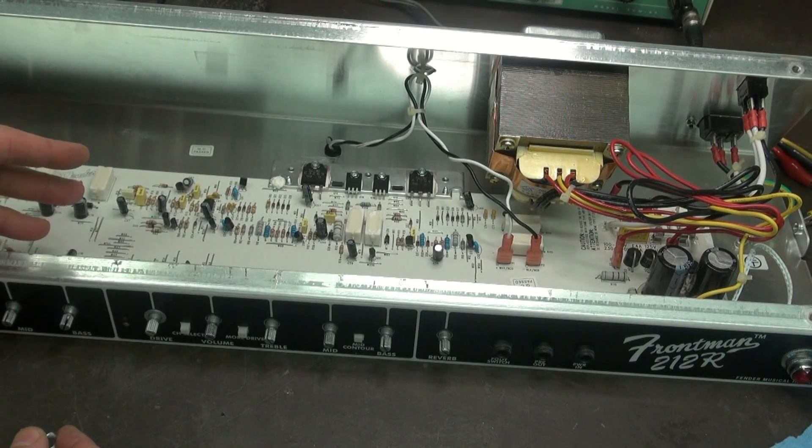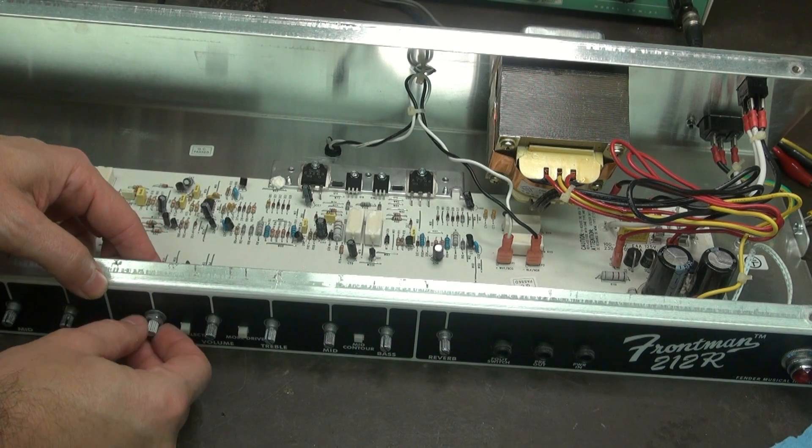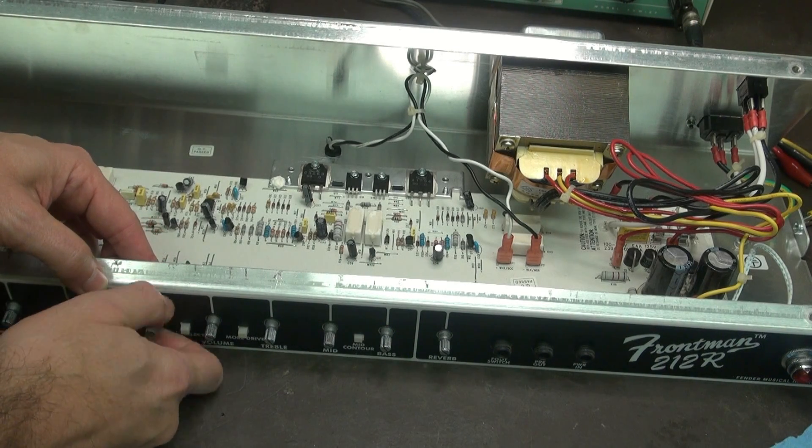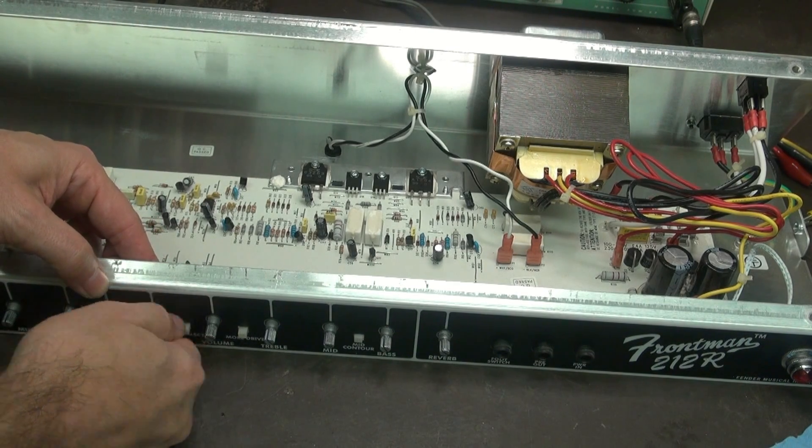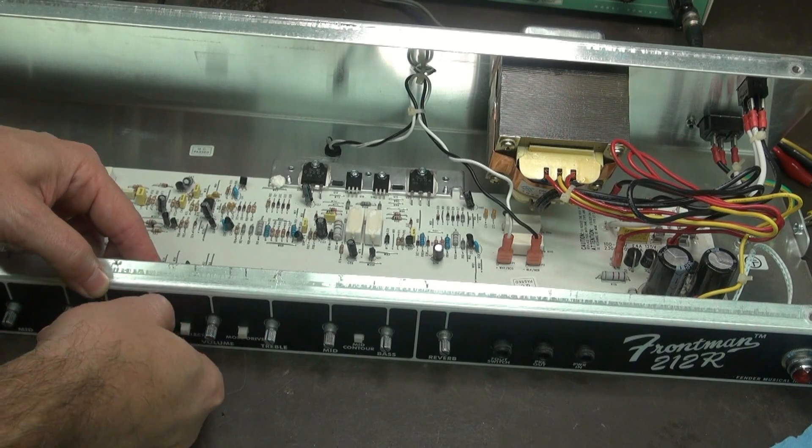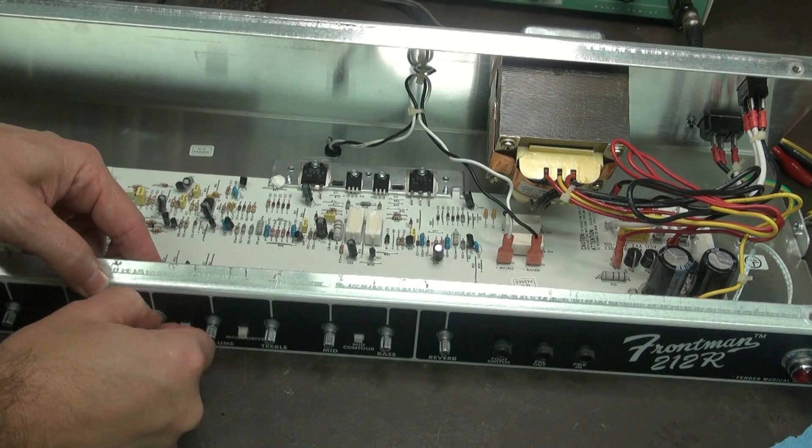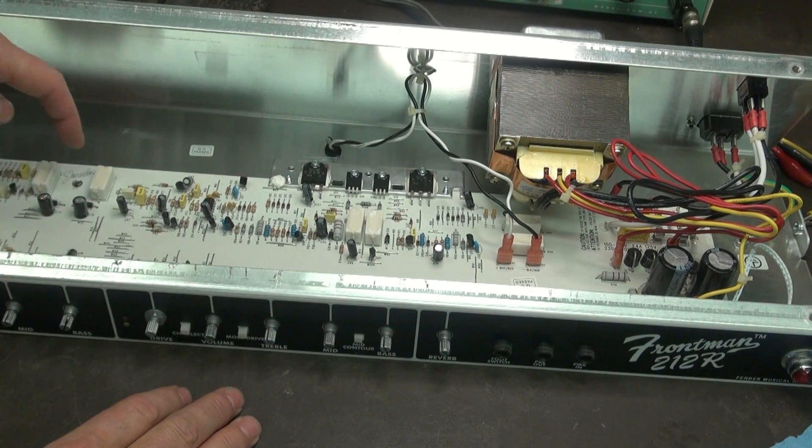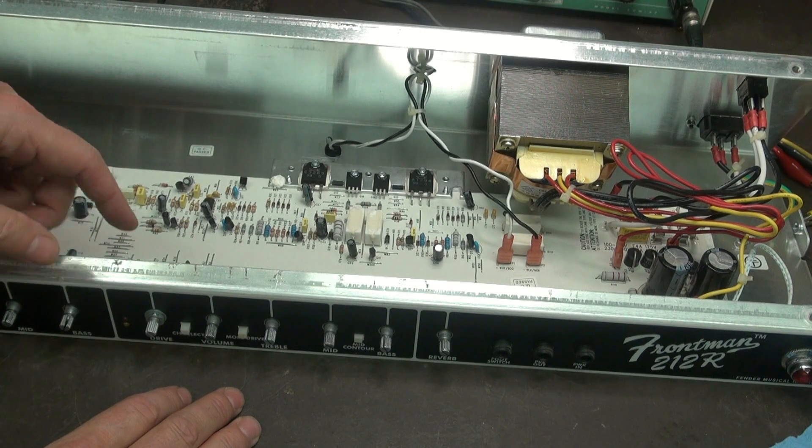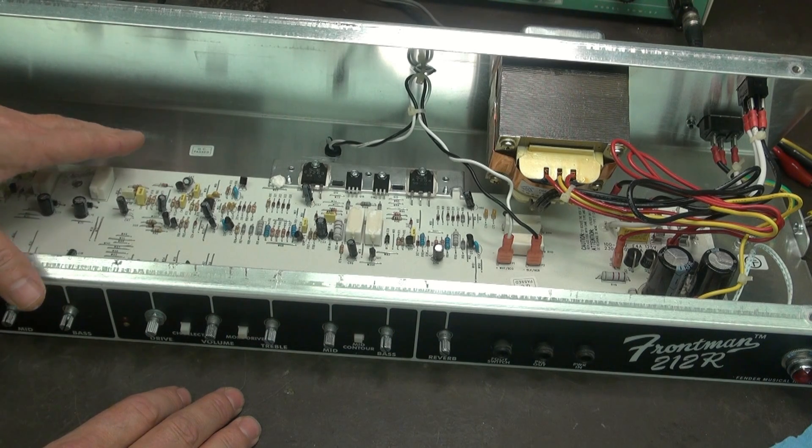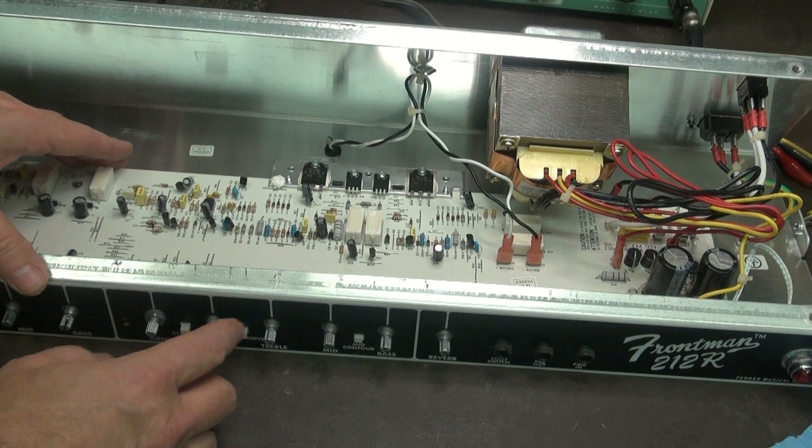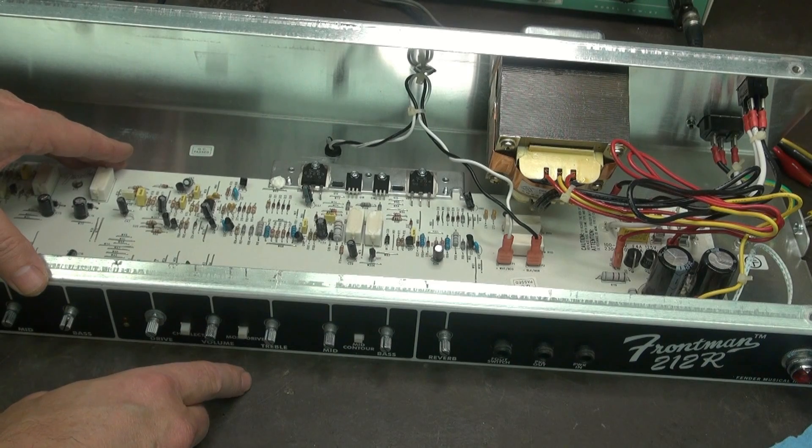One quick note on reassembly. Always start with the nuts on these controls and jacks first. Get them on there and get them snug before you put these screws in on the board. Because if you get that out of order and one of these aren't seated properly, you can actually break a potentiometer. So use caution.